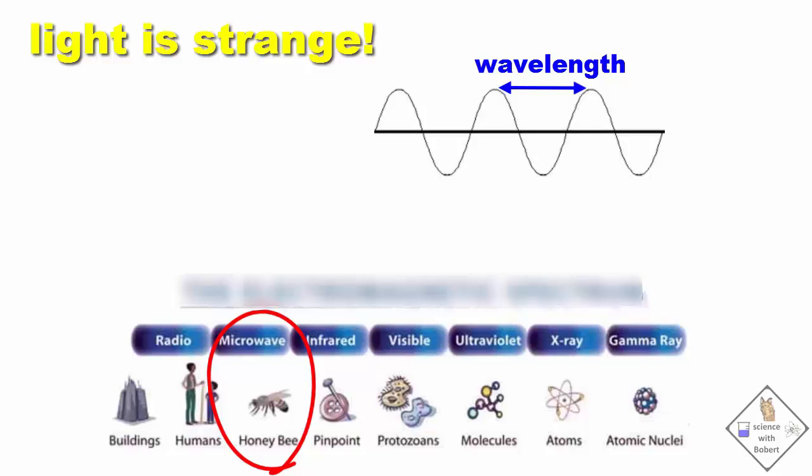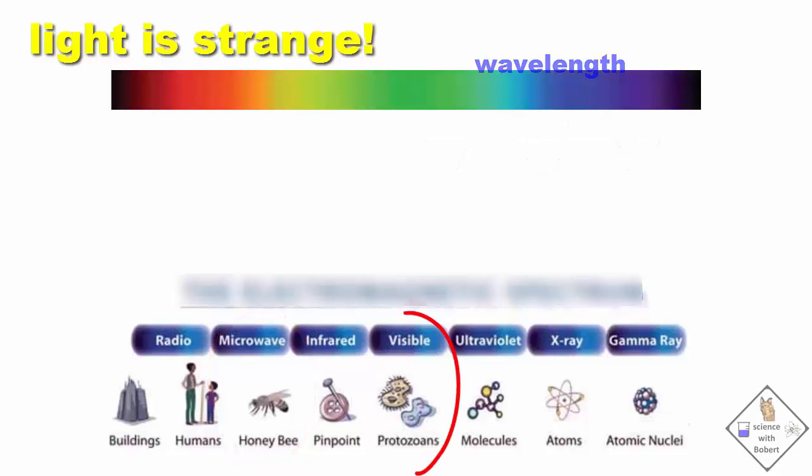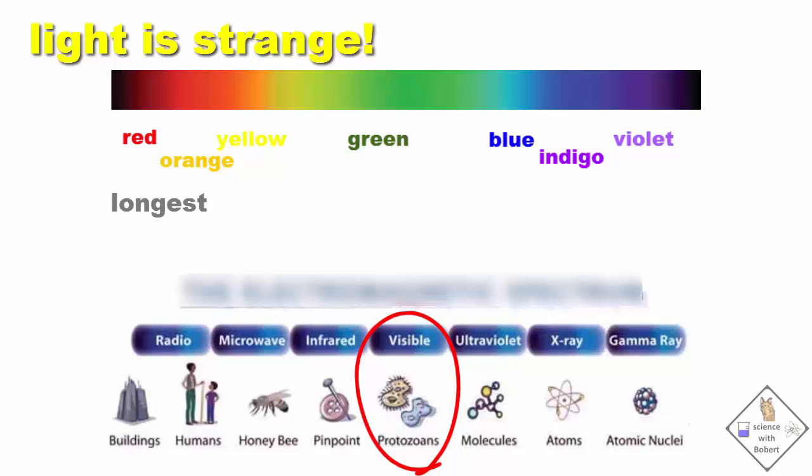It is hard to believe, but the light that our eyes detect, the colors of the rainbow - red, orange, yellow, green, blue, indigo, violet - are roughly the wavelength that match the size of single-celled organisms, with red being the longest and violet the shortest.